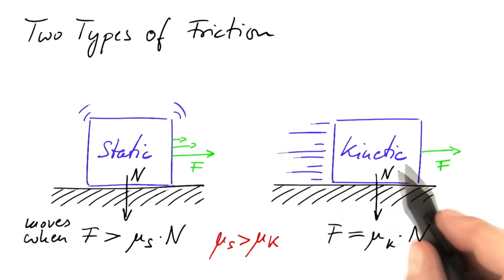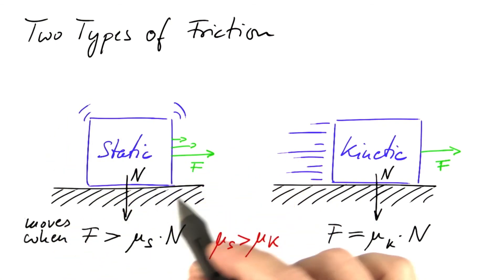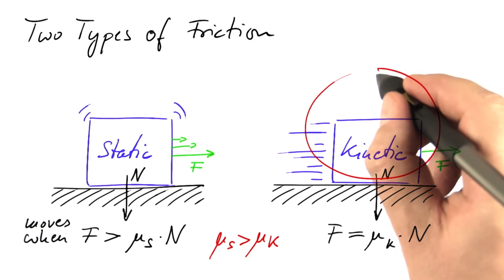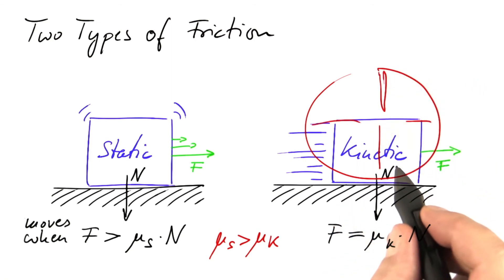And now think about braking. We want to apply the maximum amount of friction. The maximum amount of friction is found in the static regime, because the coefficient of static friction is higher than the coefficient of kinetic friction. So what we need to prevent is the locking of wheels. When the wheel stays locked, it's sliding on the ground, and we're in the regime of kinetic friction.